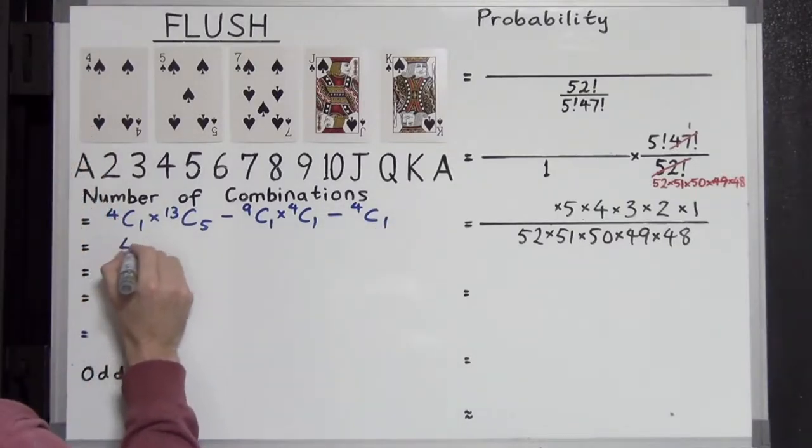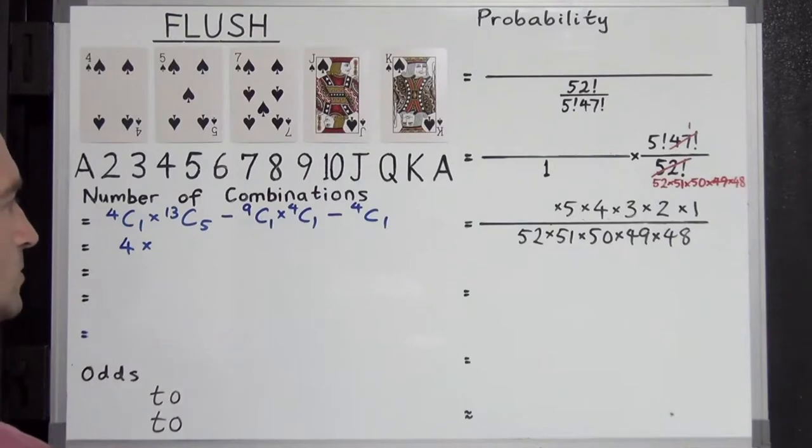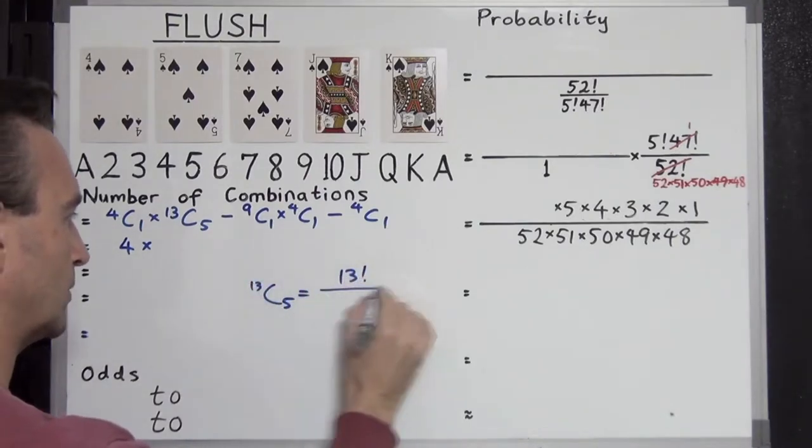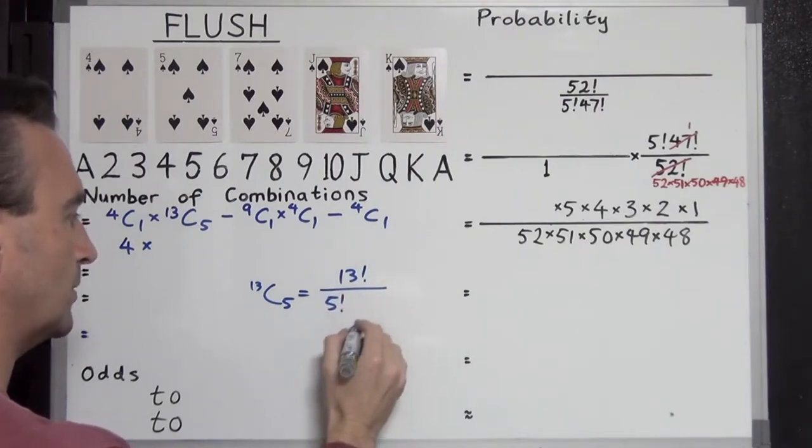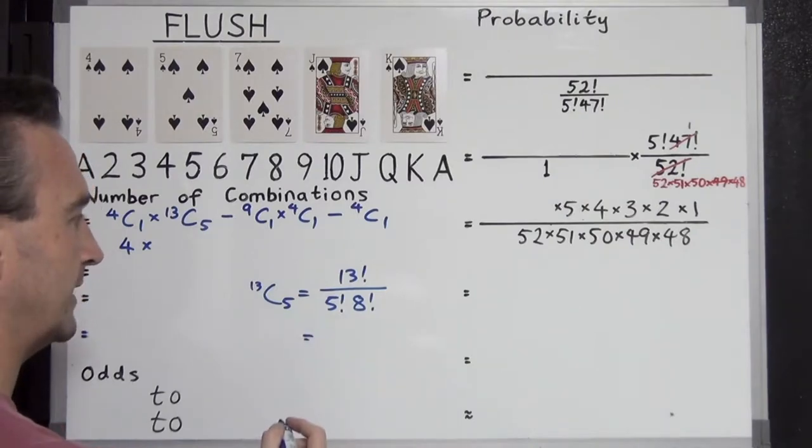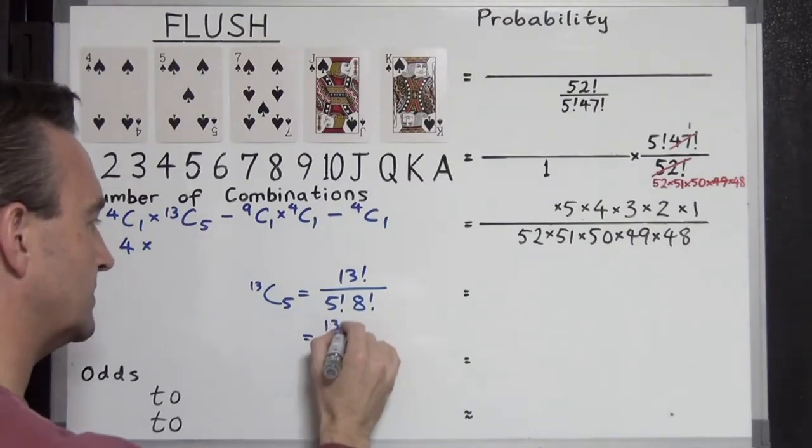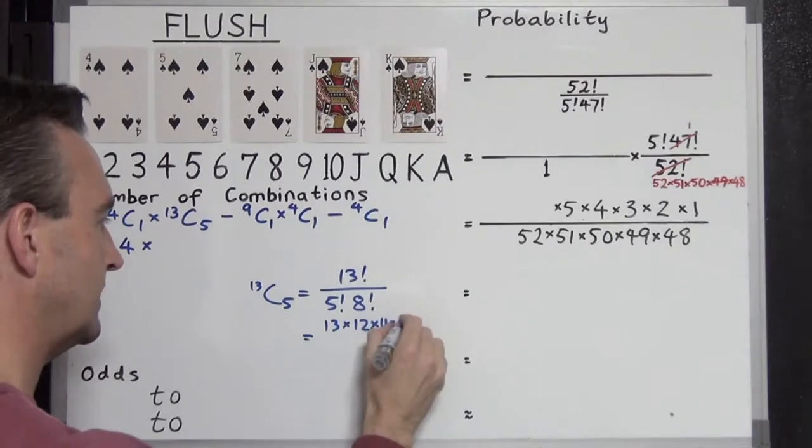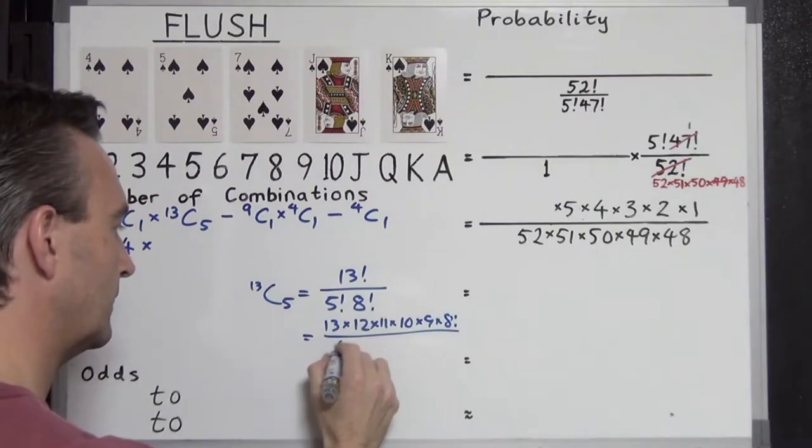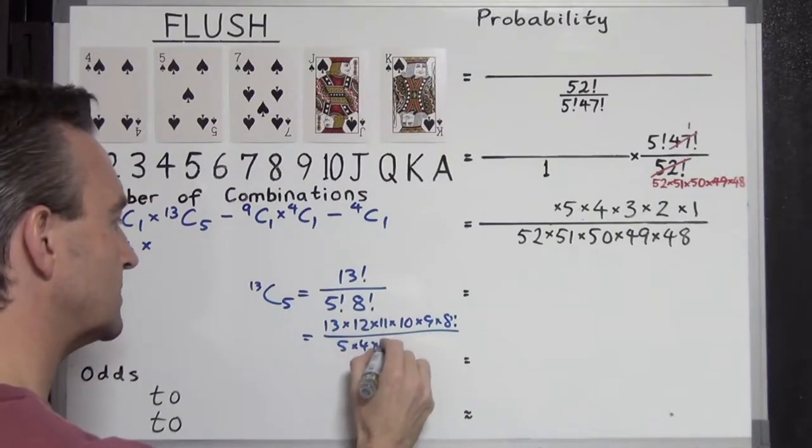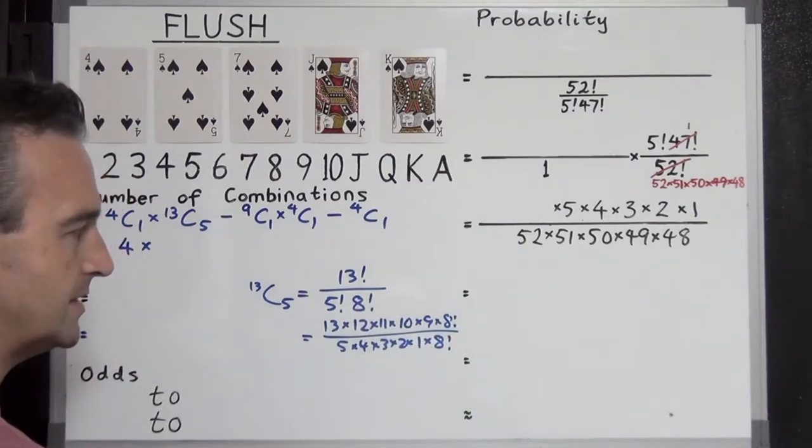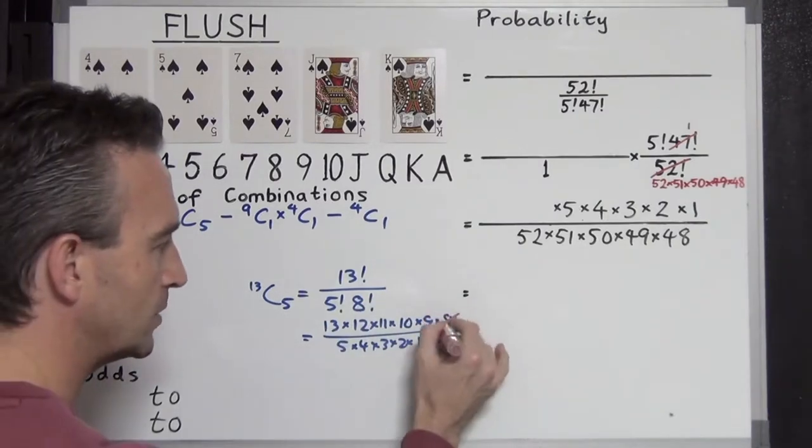Calculating this, 4C1 is 4. 13C5... oh what's that? Factorial 13 over factorial 5, also over the factorial of the difference, factorial 8. Multiplying that out, it's 13 times 12 times 11 times 10 times 9 times factorial 8, all over 5 times 4 times 3 times 2 times 1 times the factorial 8. Copy down. Let's see what this boils down to. Factorial 8 cancel out.